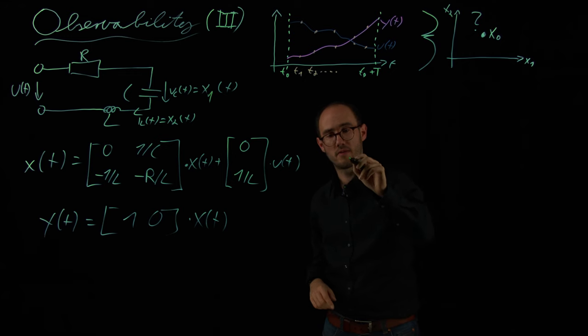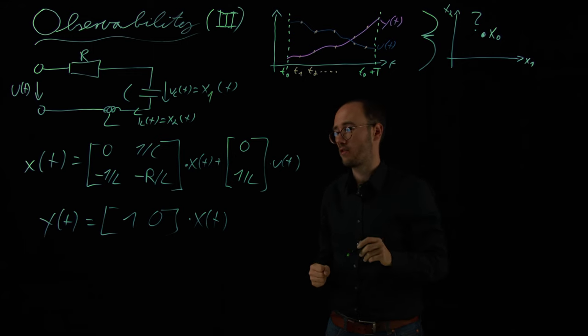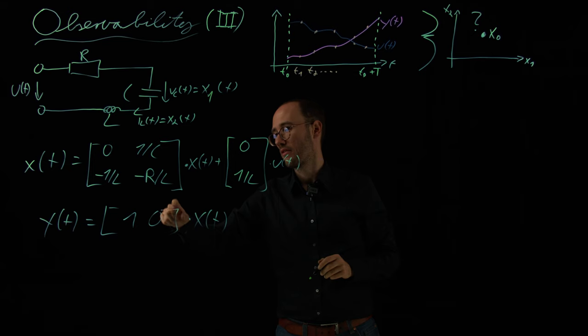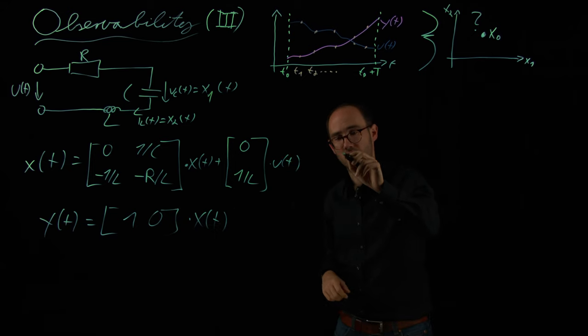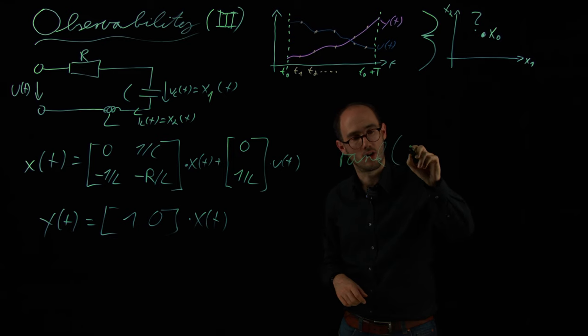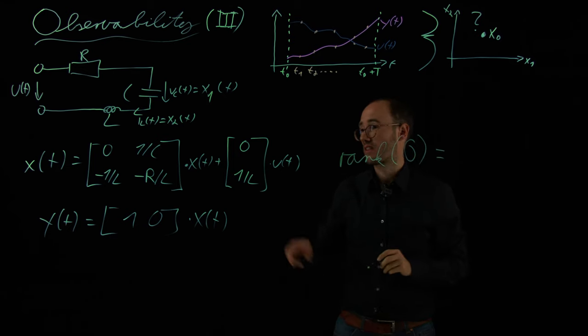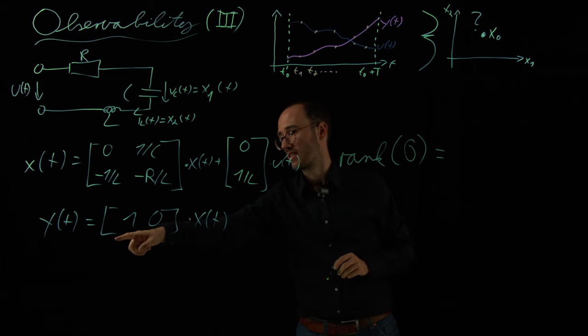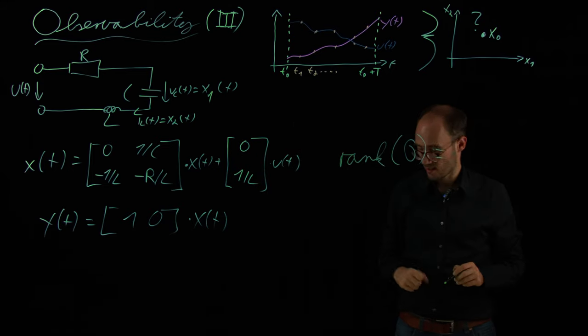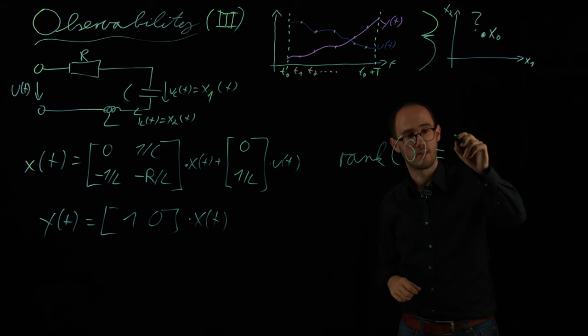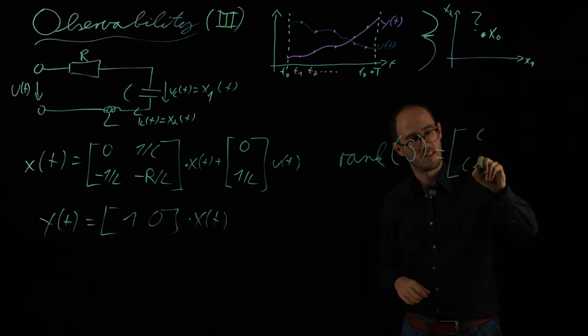In the previous lecture, we have seen, in order to evaluate if we are able to observe at least the second state, that we need to come up with the rank of the observability matrix big O. And in this second order system with a scalar output, this matrix is a two by two matrix, which is C, CA.